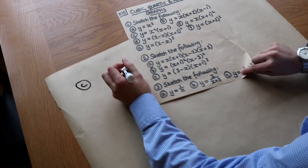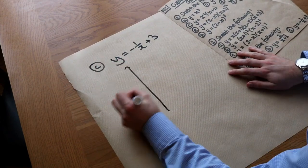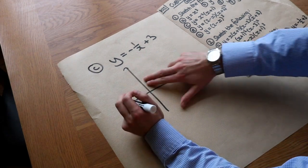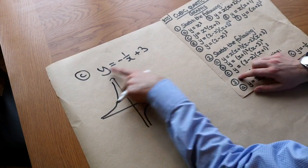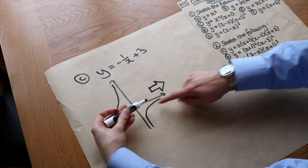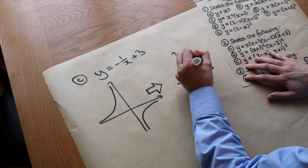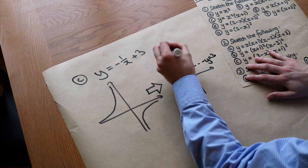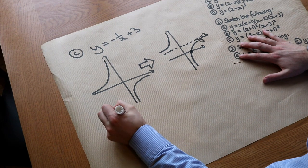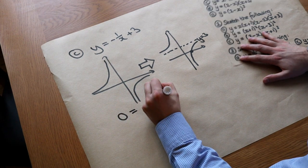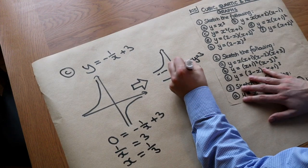For y equals minus 1/x plus 3: the graph of minus 1/x flips the standard reciprocal upside down. Adding 3 to the y-value shifts the whole graph up by 3, so the horizontal asymptote shifts from y equals 0 to y equals 3. To find the x-intercept, set y to zero: 0 equals minus 1/x plus 3, giving x equals a third.